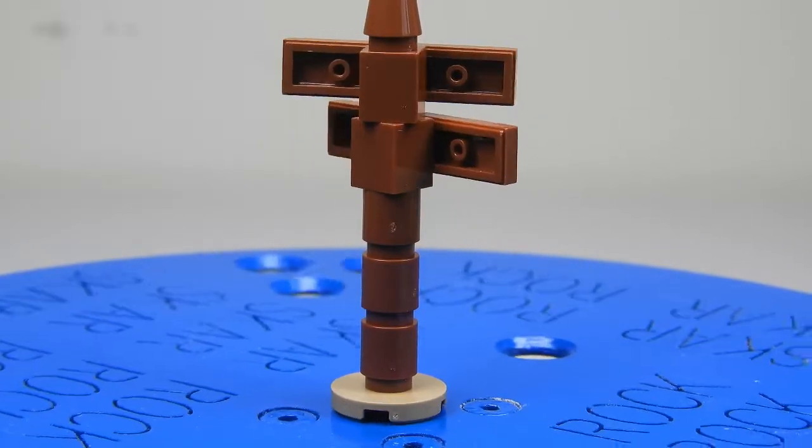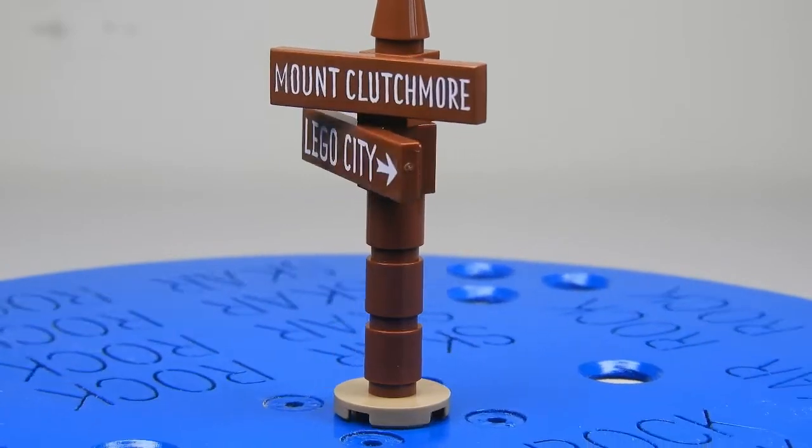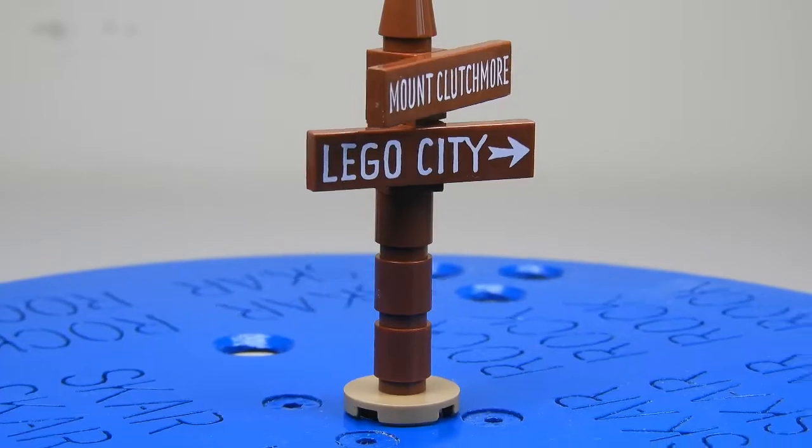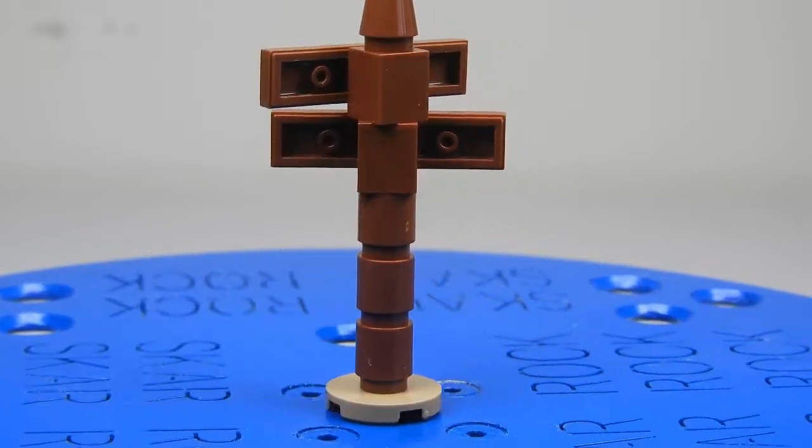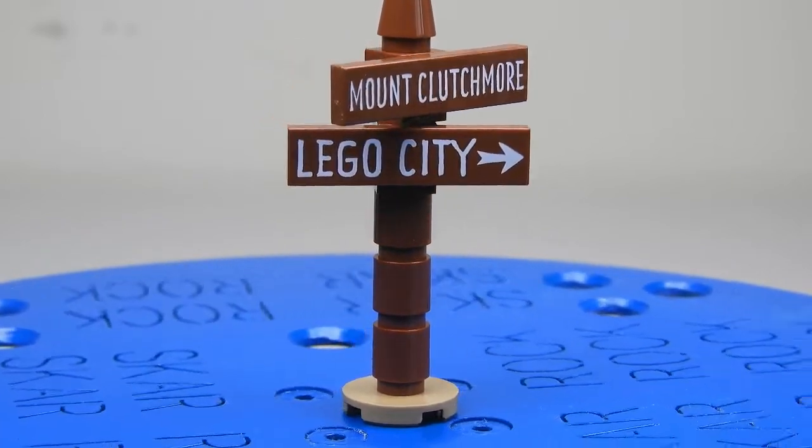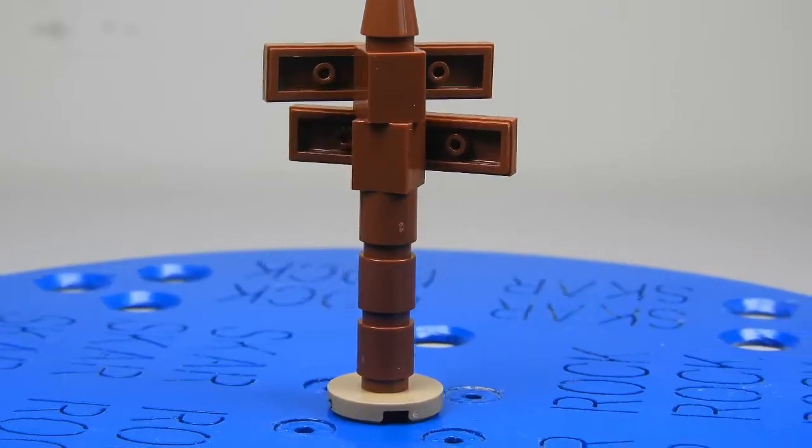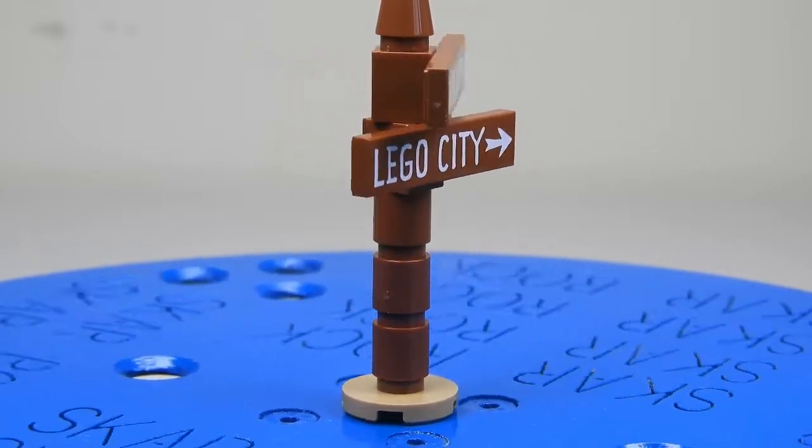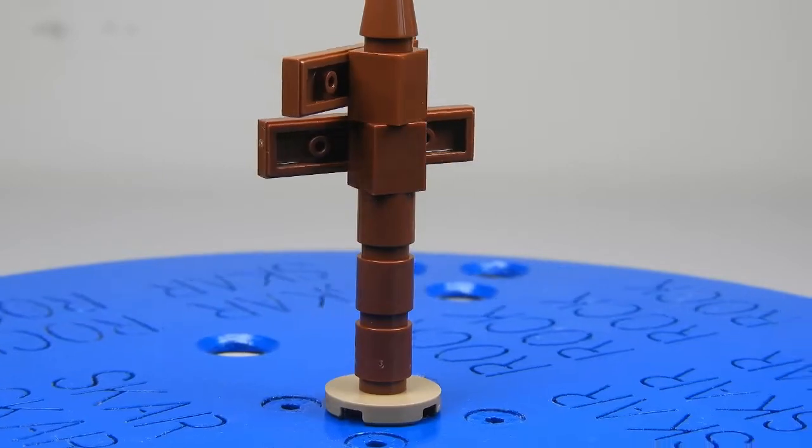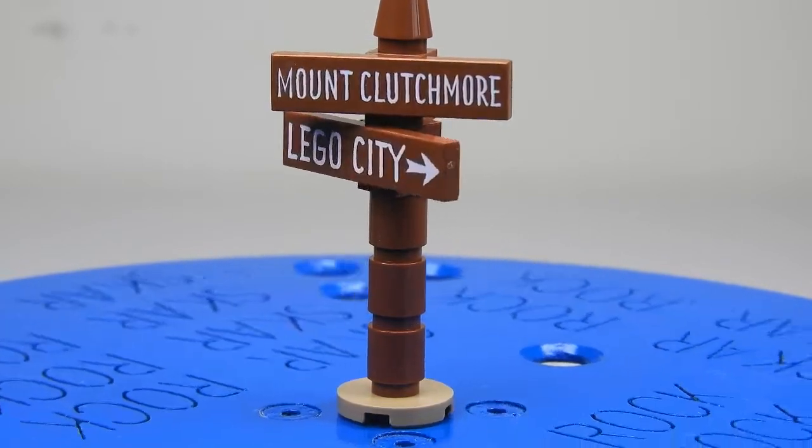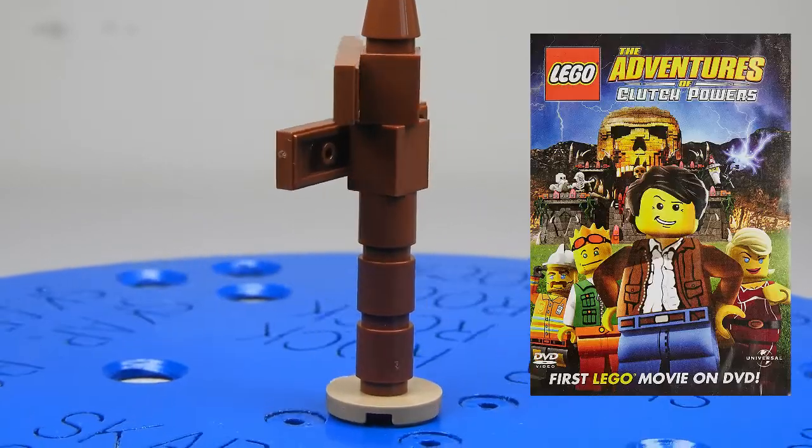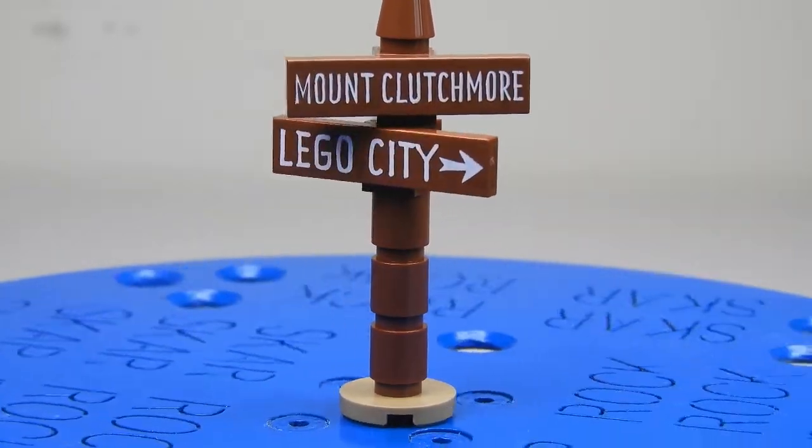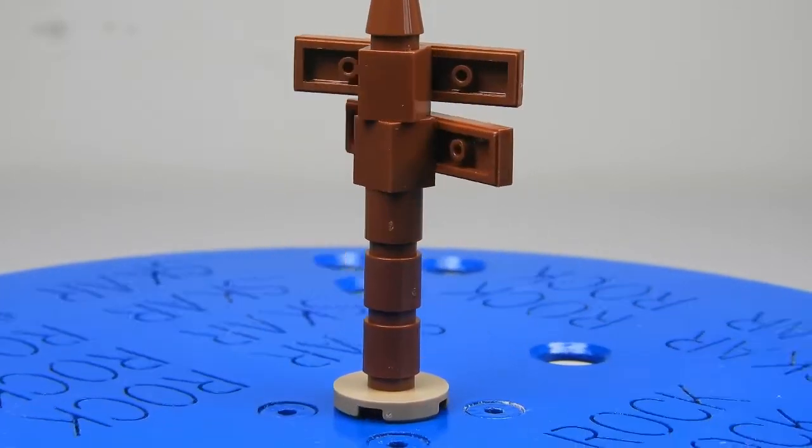Finally we have this sign post build, which is quite generic with a normal base and wooden structure. But what's cool is the two signs on this. The bottom one with an arrow says Lego City, which is an obvious pointer to the whole Lego City theme as a whole and the main city. But then it says Mount Clutchmore, and I think this might be a throwback to the first Lego film ever, in which the main character was called Clutch Powers. I think this may be a throwback to that, which I think is really cool. Let's go back and give our final opinion.